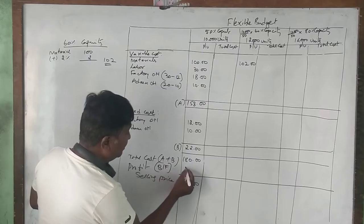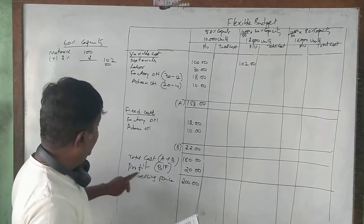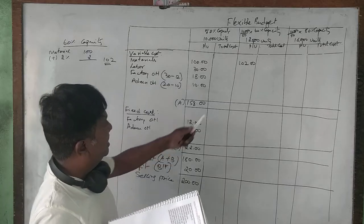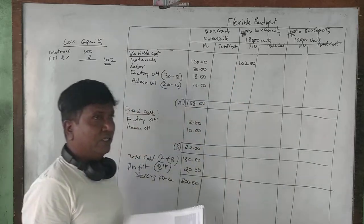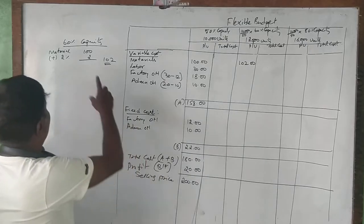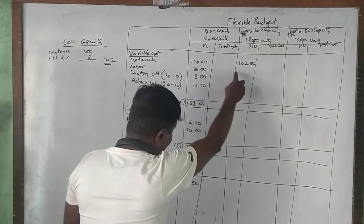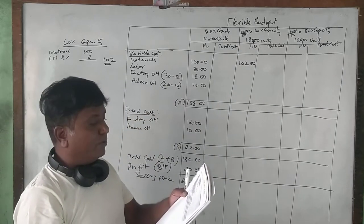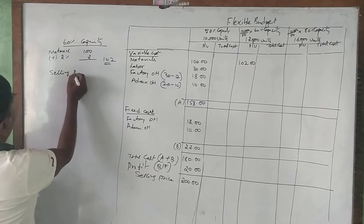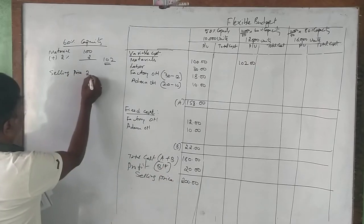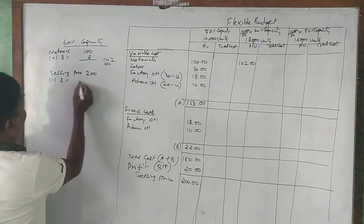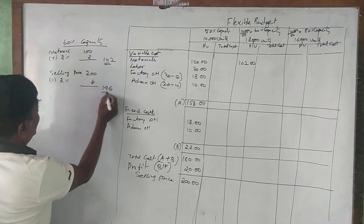At 60% capacity: selling price is 196 rupees per unit. Material cost increases by 2%, so it is 102 rupees. Selling price of 200 rupees falls by 2% — that is 4 rupees — giving a selling price of 196 rupees per unit for the 60% capacity level.